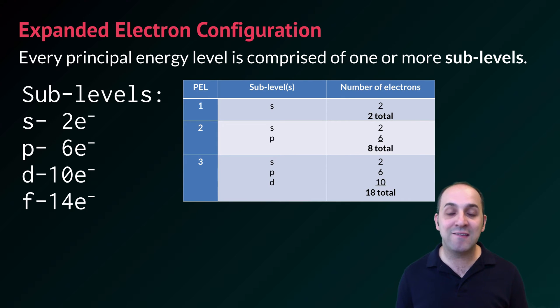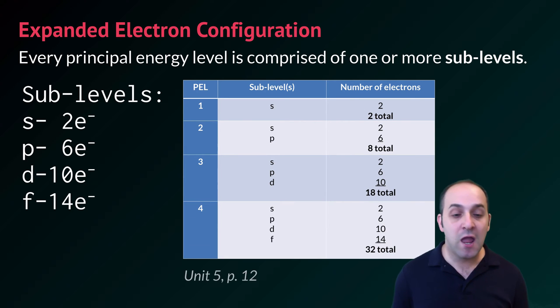Principal energy level three has an S, a P, and a D, and so it can fit two in the S, six in the P, and 10 in the D for a total of 18. And principal energy level number four has an S, a P, a D, and an F, fitting a total of two in the S, six in the P, 10 in the D, and 14 in the F for a total of 32 electrons.